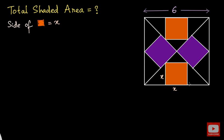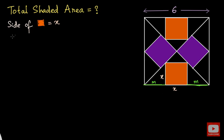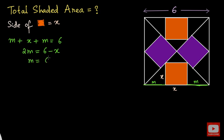Now I want to find out this length here — the one I am shading in green color. Let me call this length as m, and this length as m. Both of them will be m because of symmetry. If you add m, x, and m, these three lengths equal the side length of the square, which is 6. So m + x + m = 6, giving us 2m = 6 − x, and therefore m = (6 − x) / 2.